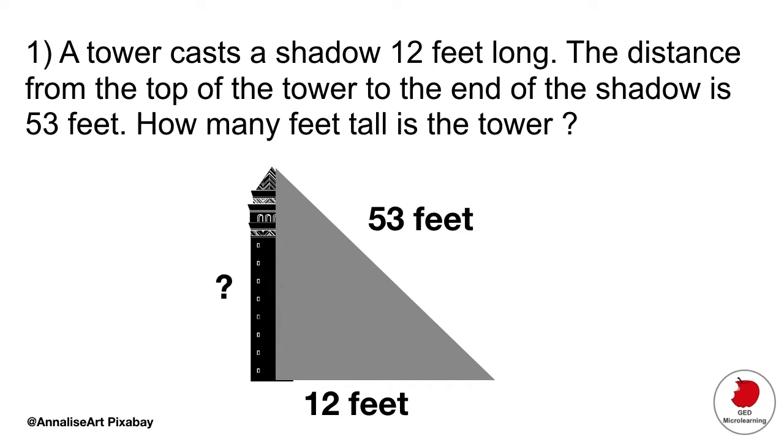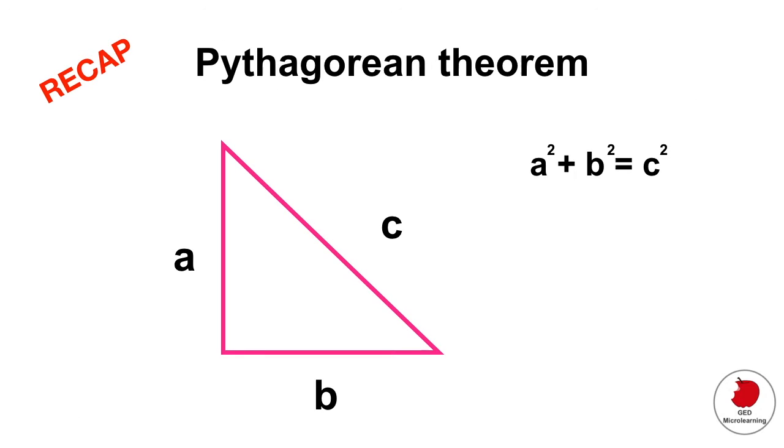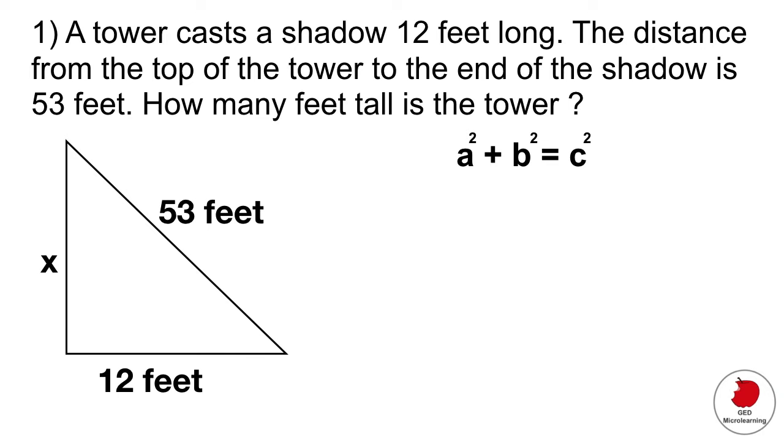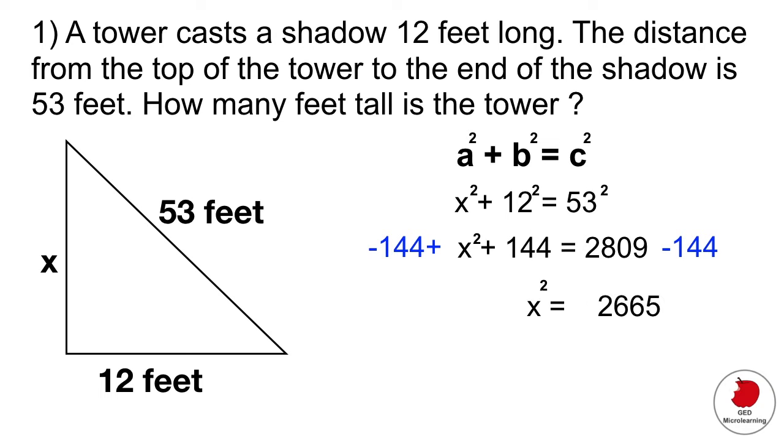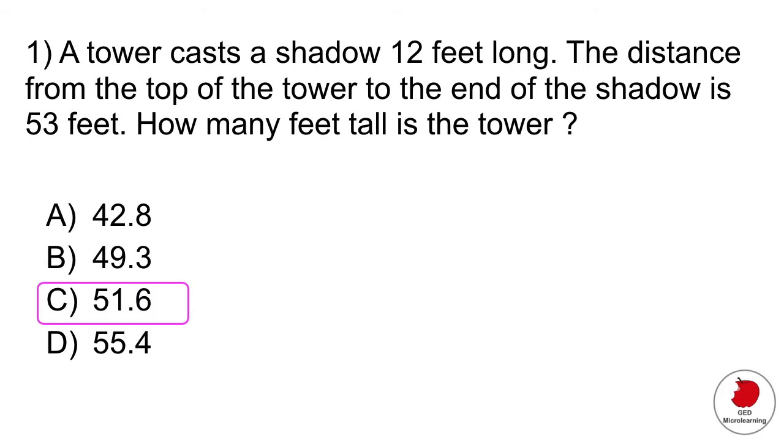Essentially what they're asking you here is to do a Pythagorean theorem problem which uses this equation. So a squared plus b squared is equal to c squared. You take your information from the question and plug it into your equation. Then you want to isolate that x on the left so you would subtract 144 from both sides. Then remember that in order to get rid of that exponent you'd have to take the square root from both sides and that gives you 51.6. So that's how tall the tower is. Answer C.